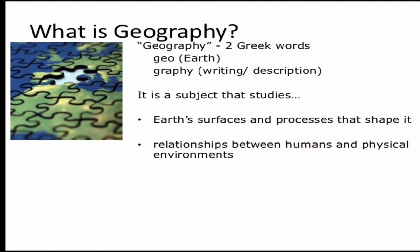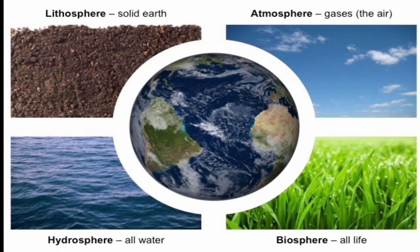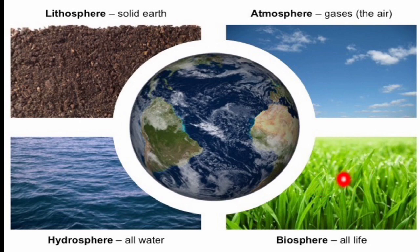Geography tells the relationship between human society and nature and the universe. Earth's surface consists of four spheres: lithosphere, the layer of rocks; atmosphere, the layer of gases; hydrosphere, the water bodies; and all three together comprise the biosphere, where 'bio' means life.